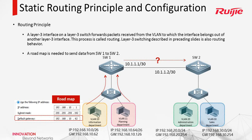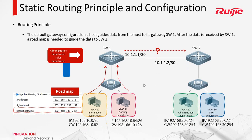In this topology, if this PC needs to forward a packet out of this network, it must pass through the gateway. So a route map is needed to send data from SW1 to SW2. We can configure the gateway IP address using the SVI interface IP address. After the data is received by SW1, a route map is also needed to forward to SW2.